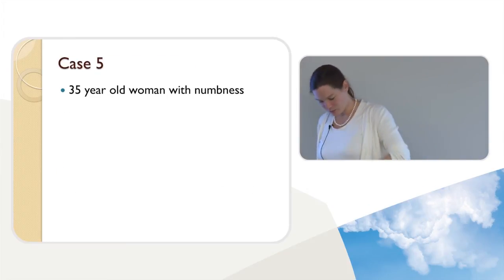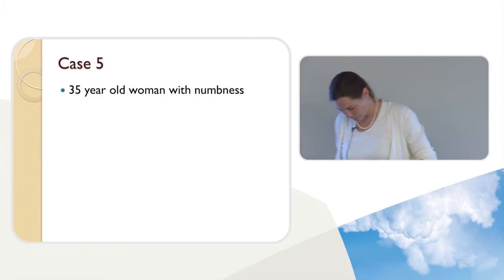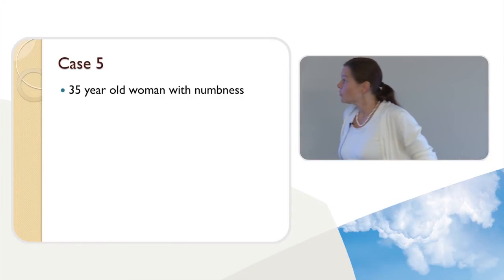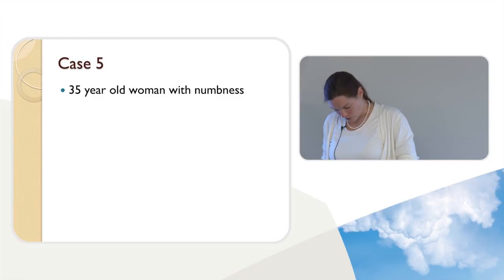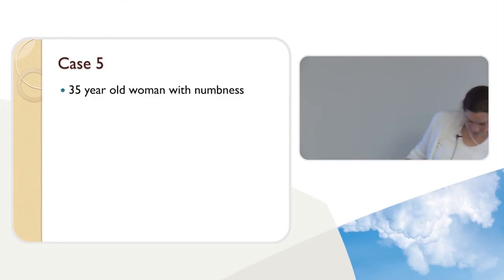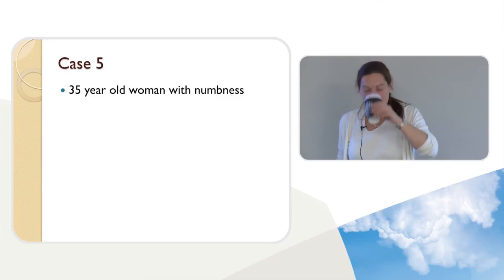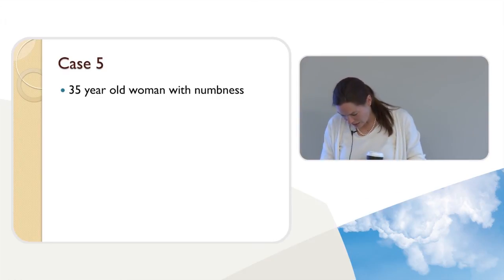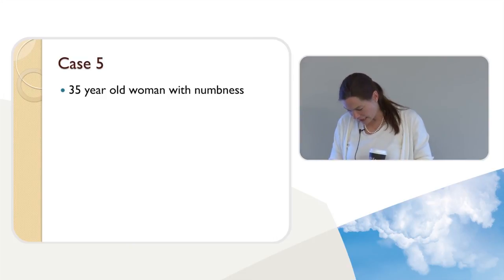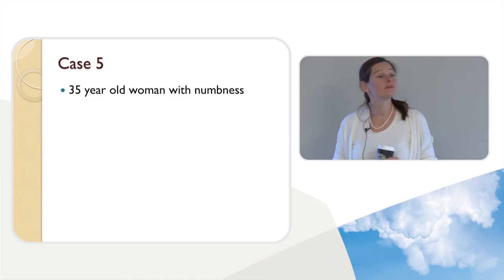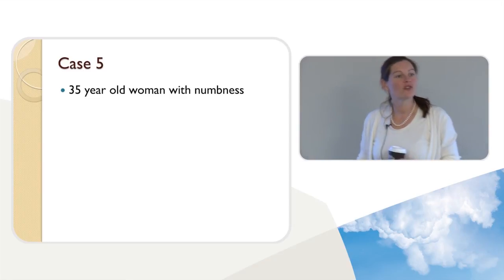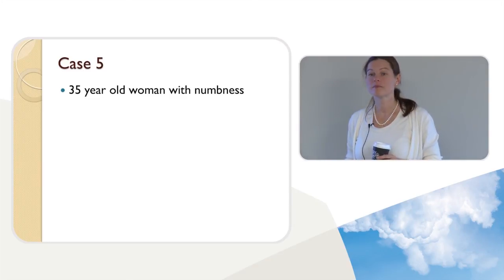We've got 10 minutes to afternoon tea and we'll do one more case. A 35-year-old woman with numbness — what would you like to know? Where is she numb? She's numb in her right arm and leg. How long for? One to two weeks. Does it come on suddenly? It's been gradually worsening over that timeframe. Constant or intermittent? Constant.